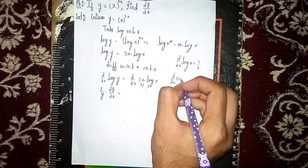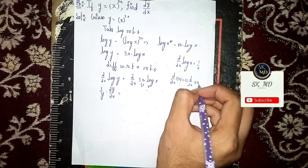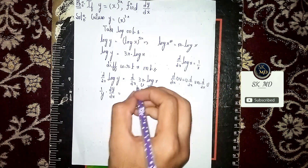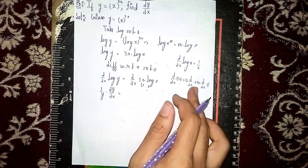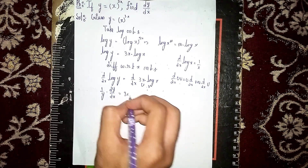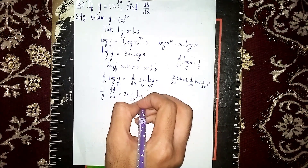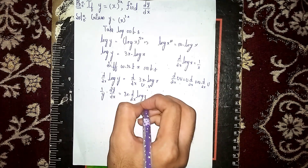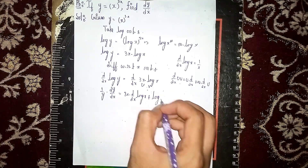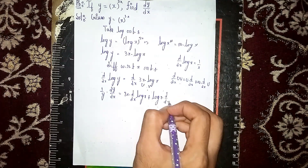The UV rule is: d/dx of uv equals u into d/dx of v plus v into d/dx of u. Here u is 3x and v is log x. So we get 3x into d/dx of log x, plus log x into d/dx of 3x.